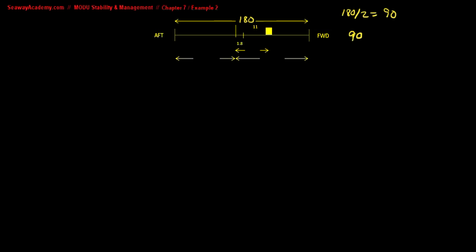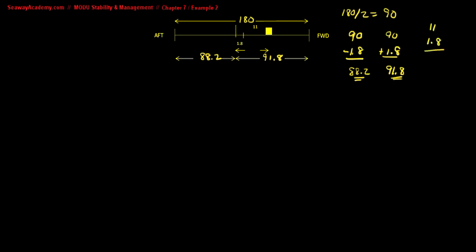The length of the vessel is 180 meters. You divide this by 2 to get 90. The center of flotation is 1.8 meters aft of midships, so you subtract 1.8 from 90 to get the distance aft, which is 88.2 meters, and you add 1.8 to 90 to get the distance forward, which is 91.8 meters. To calculate the distance of the weight from the center of flotation, the weight is placed 11 meters forward of midships, so you add 1.8, giving a distance of 12.8 meters to the center of flotation.